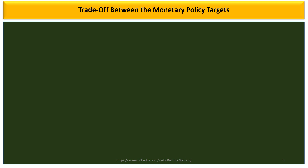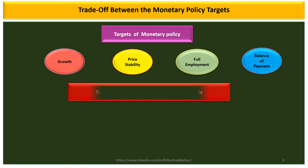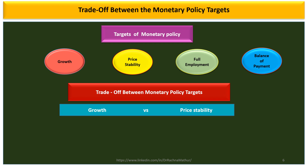Another problem, along with policy lag, is the trade-off between the targets of monetary policy. The final targets — growth, price stability, full employment, and balance of payment — have trade-offs among themselves. For example, when there is high growth and the factors of production become fully employed, growth beyond that point leads to inflation, which violates the target of price stability. So there is a trade-off between growth and price stability.